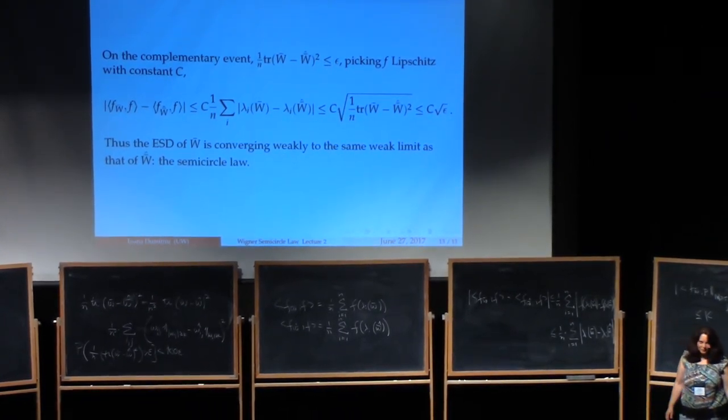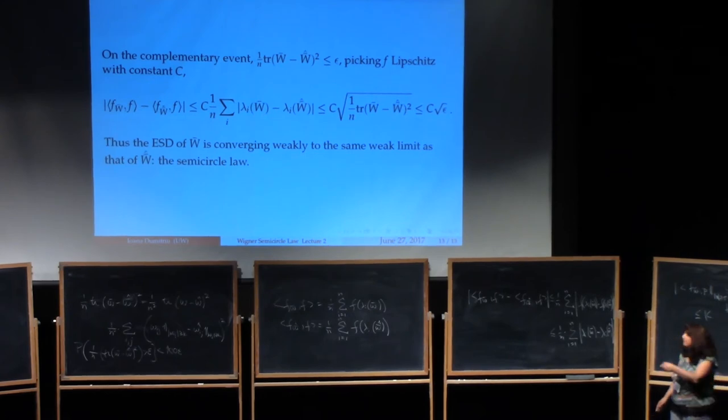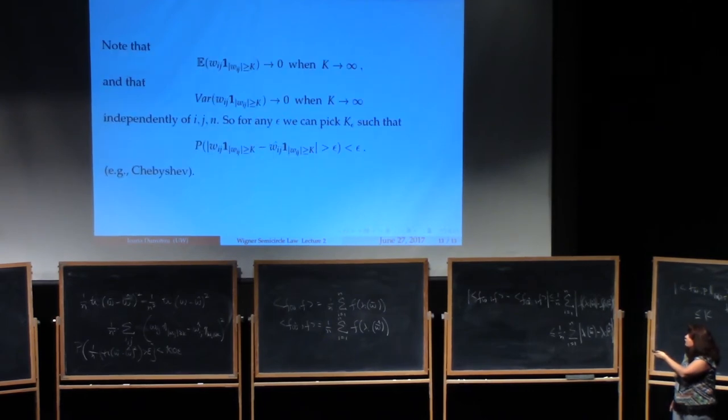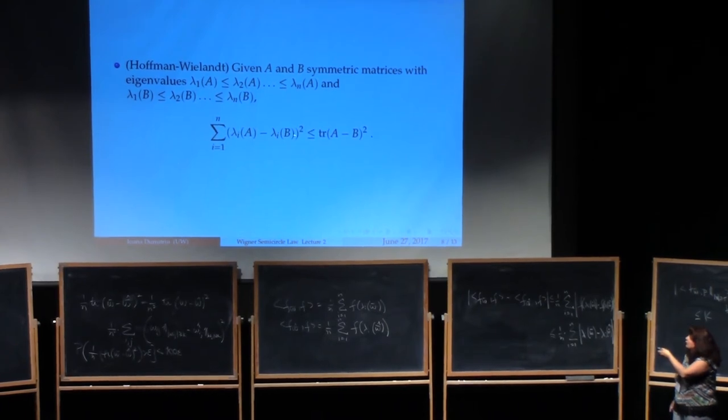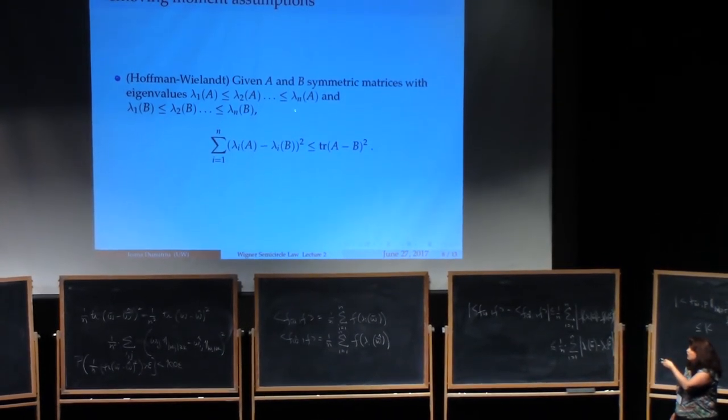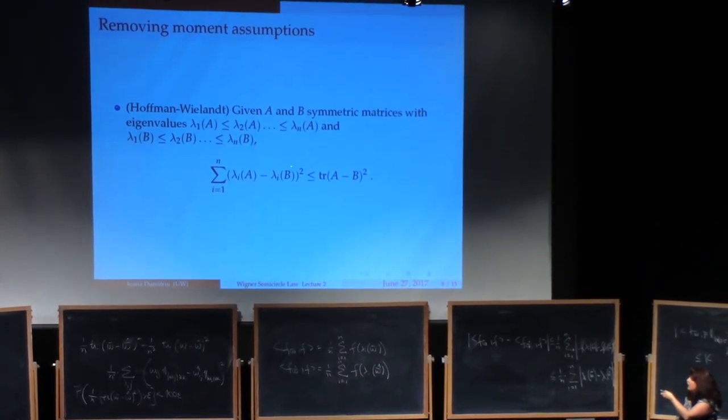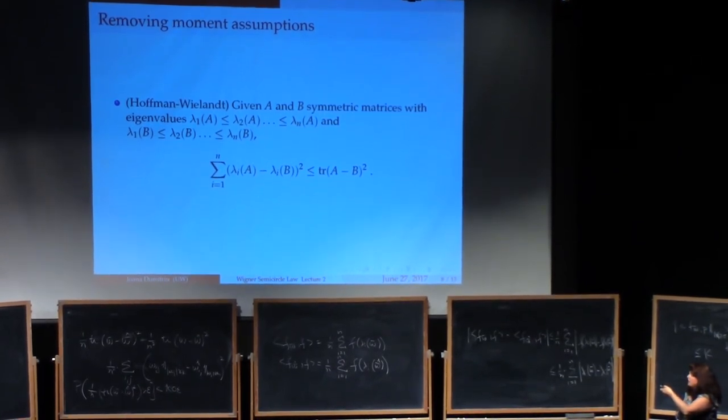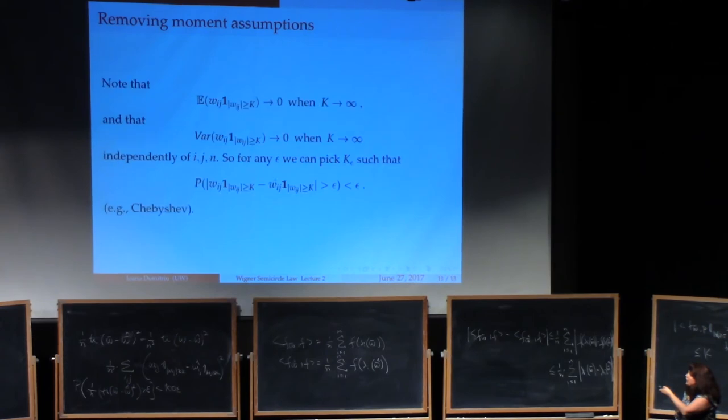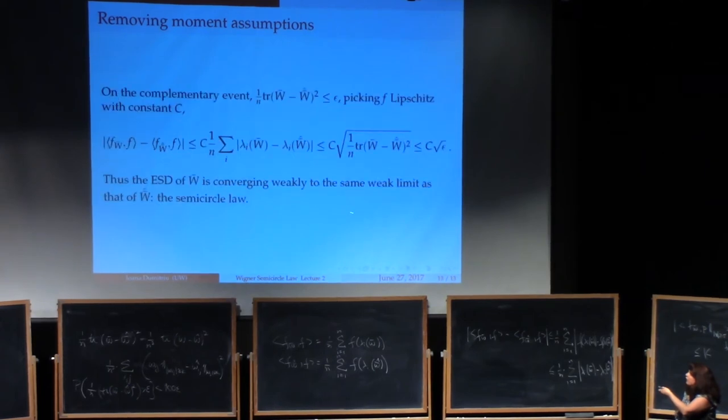But F is Lipschitz. So that means that each term in this sum here can be bounded by some constant, by the constant fixed finite constant C corresponding to F times the difference of the eigenvalues. So one over n sum i equals 1 to n lambda i W bar minus lambda i W bar hat. And that's this inequality right here. That's the benefit of using Lipschitz functions. And now we can go back and use Hoffman-Wielandt. What does Hoffman-Wielandt say? It says that if instead of doing, if I have squares here then I get the bound with a minus b squared. Now here I don't have squares, I just have this.